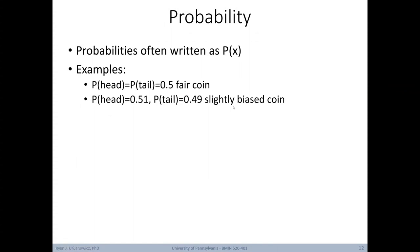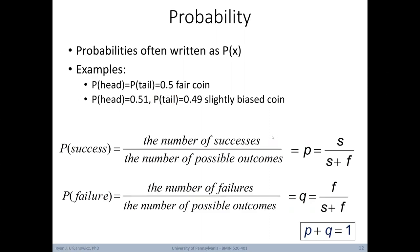It's also possible to have a slightly biased coin, with the probability of heads being 0.51 and the probability of tails being 0.49. Formally, the probability of success is the number of successes divided by the number of possible outcomes. The probability of failure is just the opposite. Notably, when we have two outcomes, the sum of our two probabilities of failure and success should equal 1.